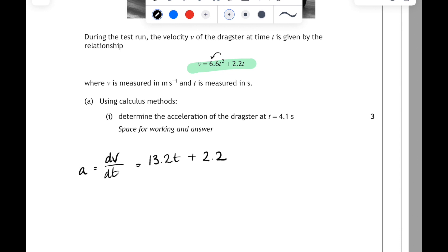And then all we have to do, because that's the relationship for the acceleration, is sub in for t equals 4.1. So 13.2 times 4.1, add the 2.2, and if you do that on your calculator, you get a final answer of 56 meters per second squared.